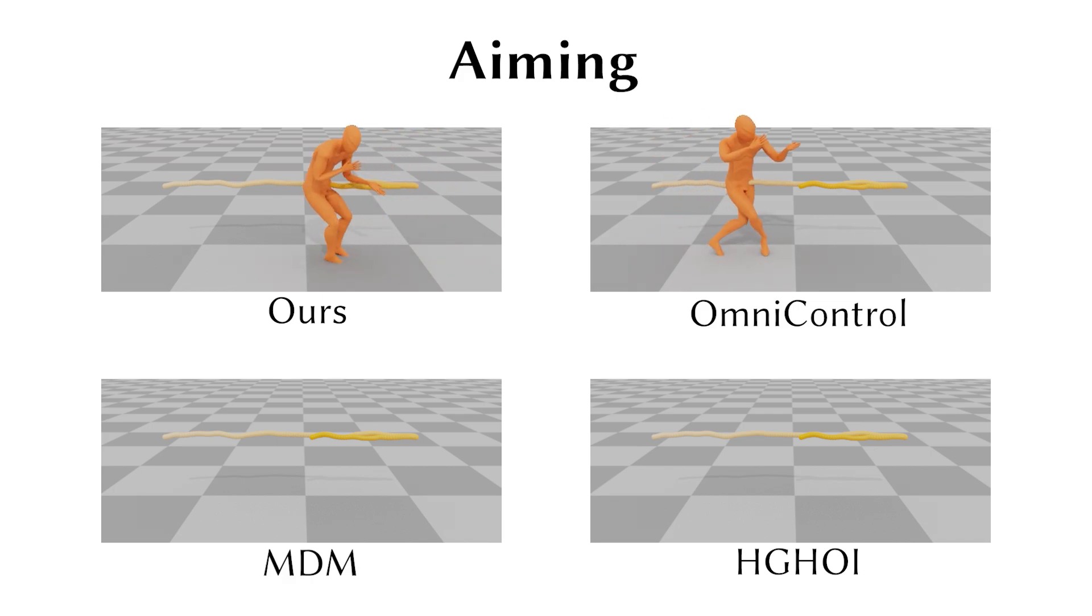Although Omni-Control produces footsteps that align with the trajectory, the result still suffers from obvious foot skate. In contrast, the motions from MDM and HGHOI show almost no foot movement.